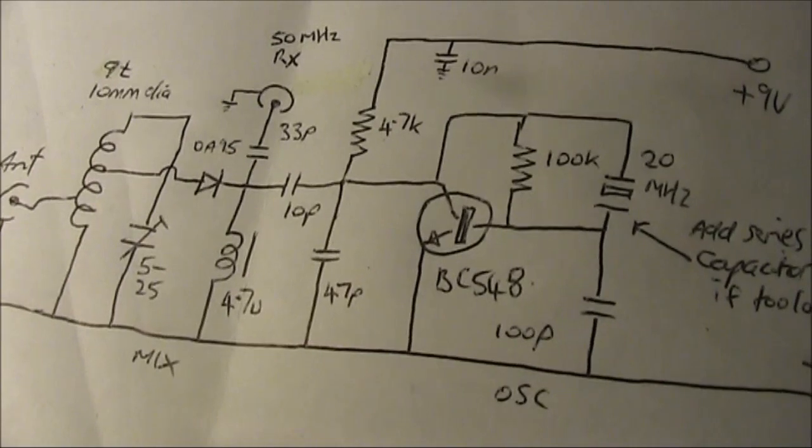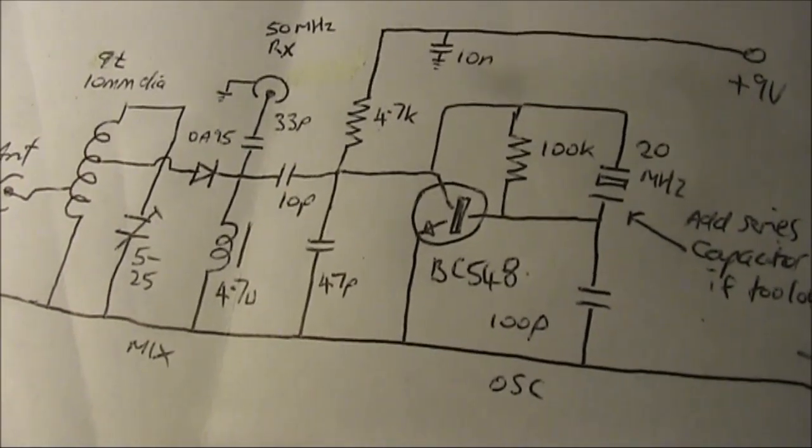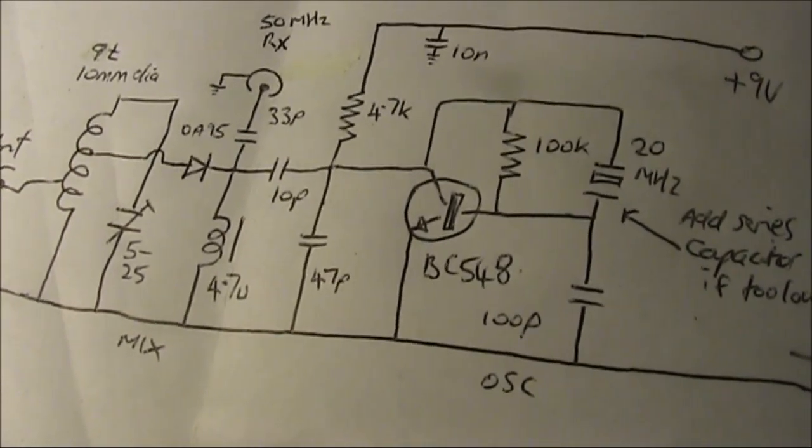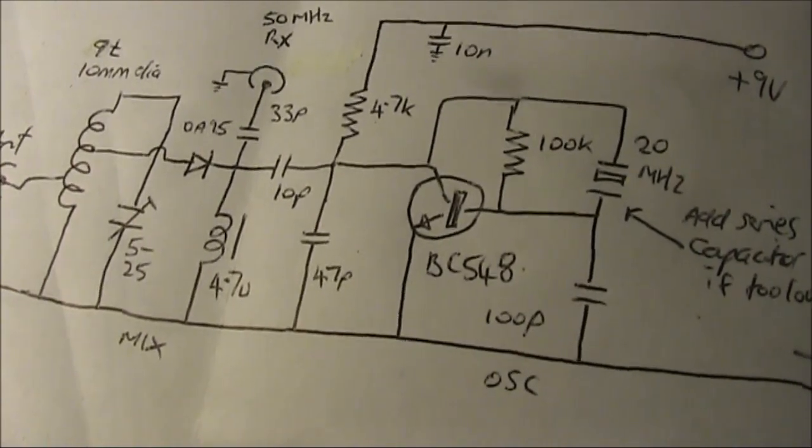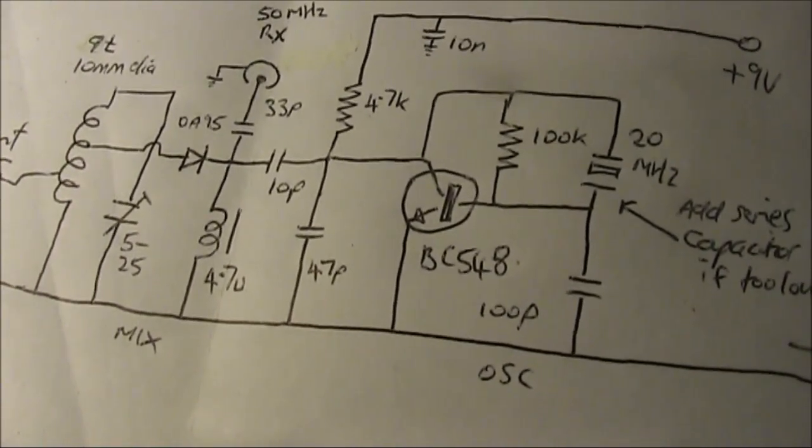There's a 4.7 microhenry RF choke. That goes from the diode to the ground. That's not critical. That can just be a small pre-wound type choke.